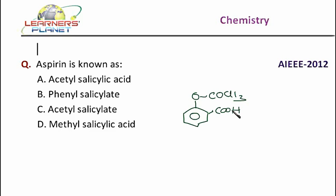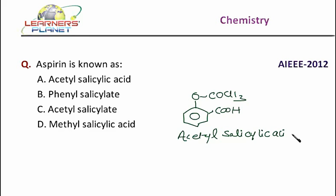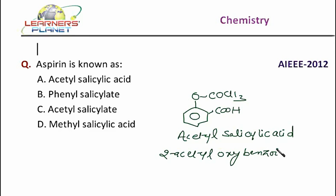So what is the name of Aspirin? It is Acetylsalicylic Acid, or it will be 2-Acetyl-Oxybenzoic Acid. So the right answer is Acetylsalicylic Acid.